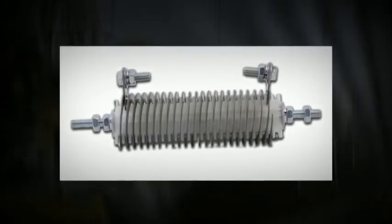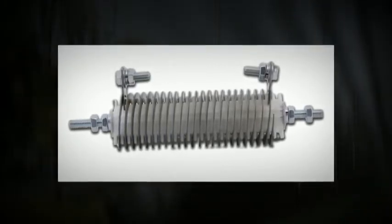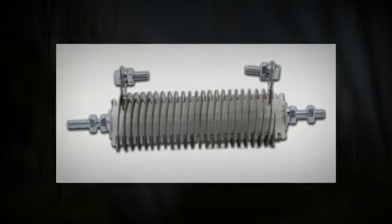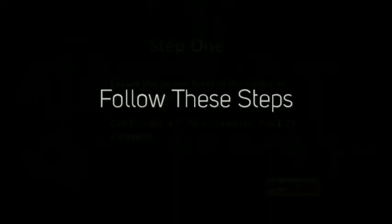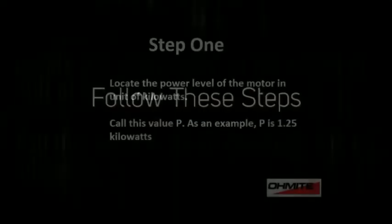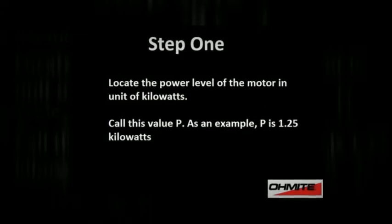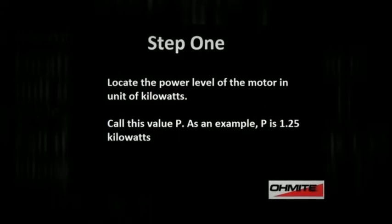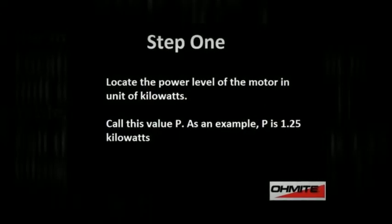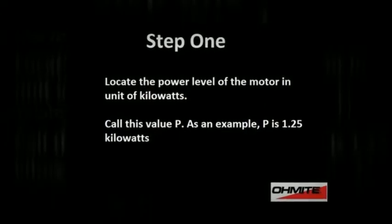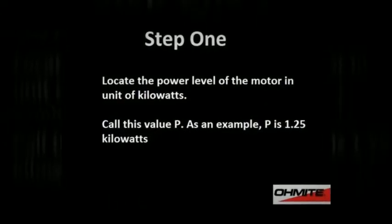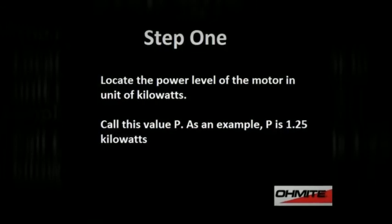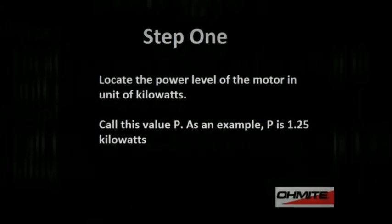To calculate the maximum dynamic brake resistance value of a small motor, follow these steps. First, locate the power level of the motor in units of kilowatts. Call this value P. As an example, P is 1.25 kilowatts.